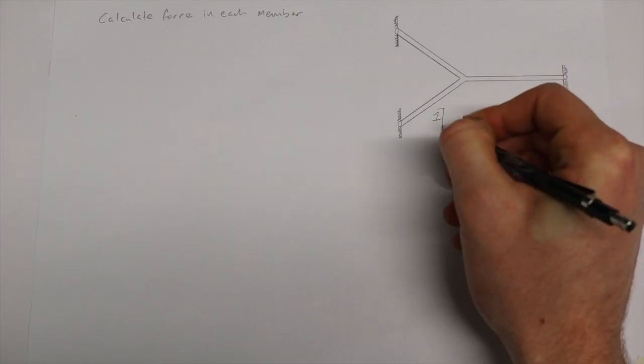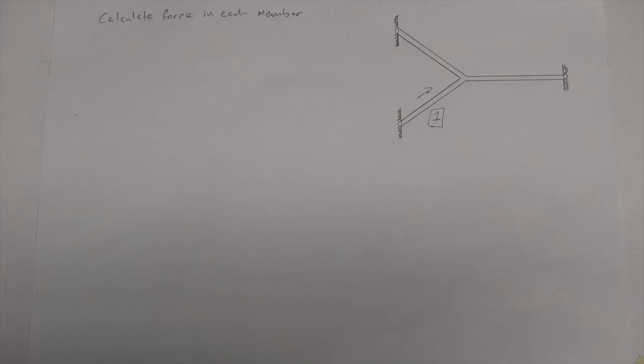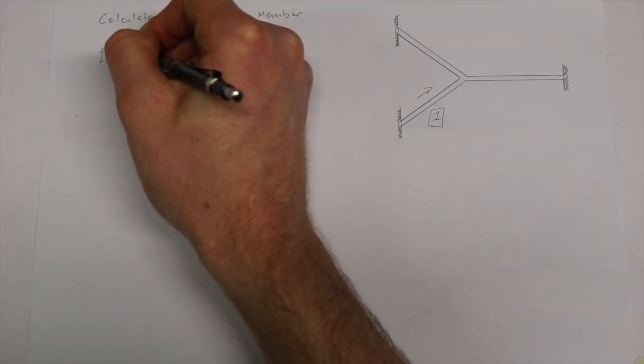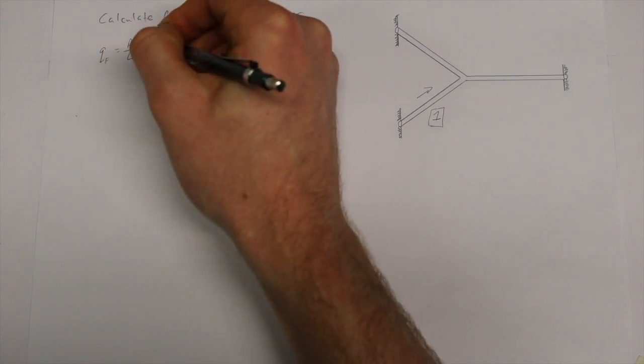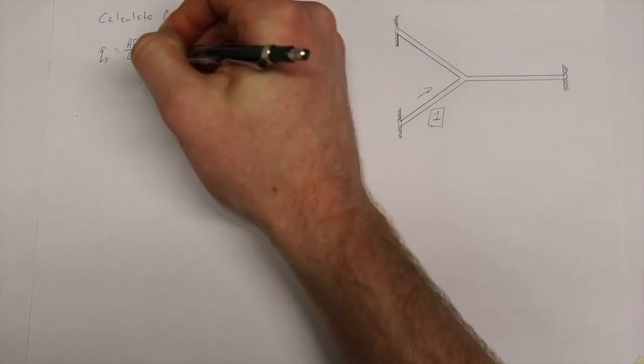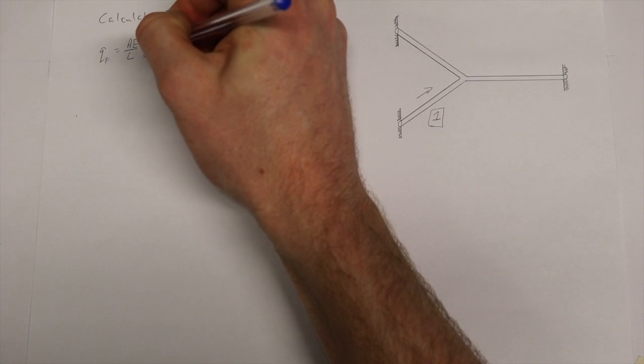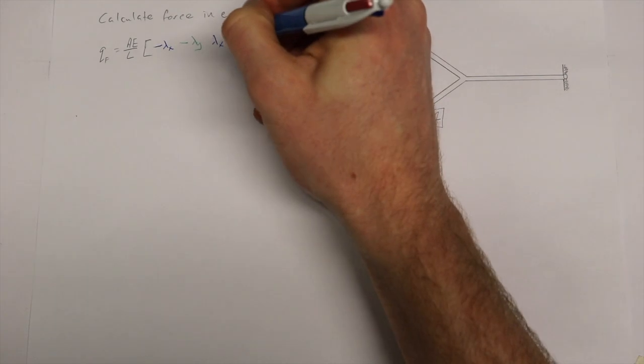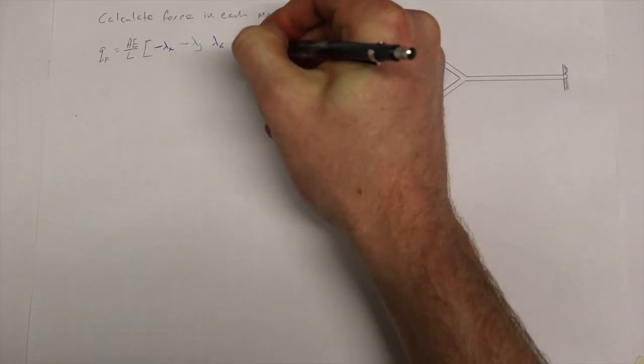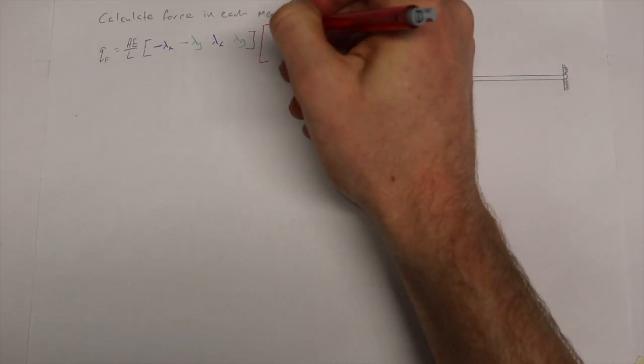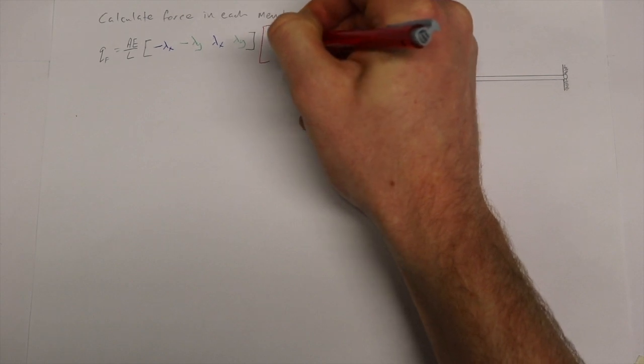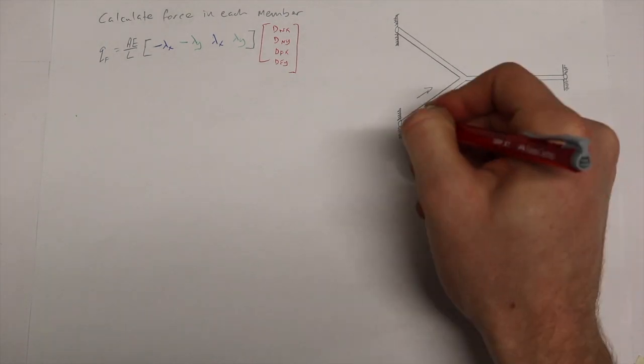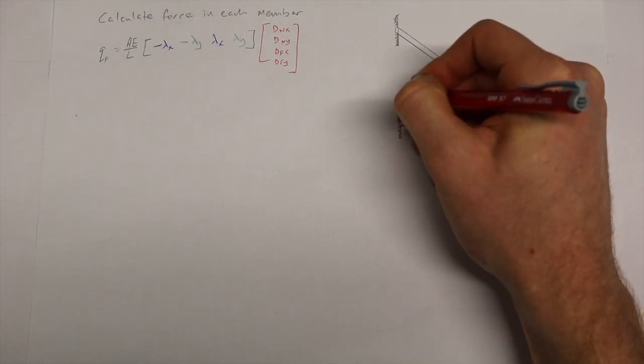Starting with member 1 we label the near and far end of the member. The formula for calculating the force on each member is Q equals AE over L multiplied by two matrices. The first being minus lambda x, minus lambda y, lambda x, lambda y. And the second being the displacement at the near x, displacement at the near y, displacement at the far x, displacement at the far y, which are labeled 5, 6, 1 and 2 as shown in the diagram.